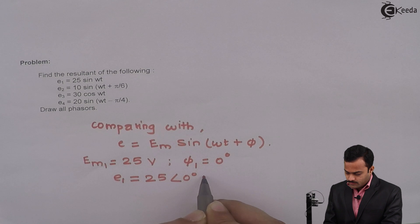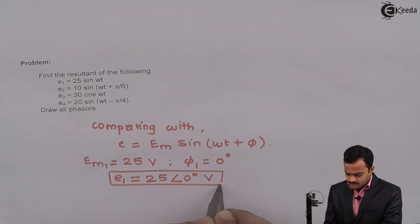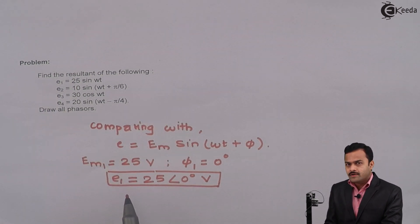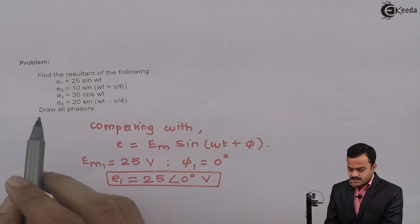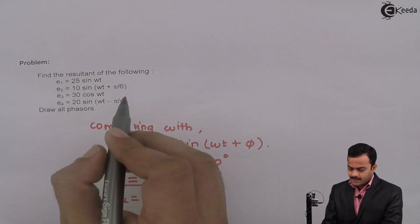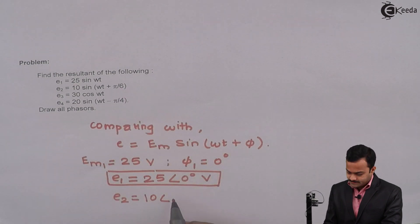Similarly E2, I can write directly. E2 is 10 at an angle π/6 radian. Let's convert that into degrees, so E2 is nothing but 10 at an angle 30 degrees.